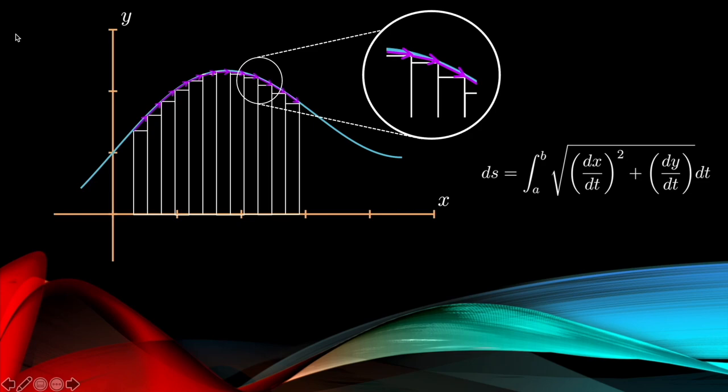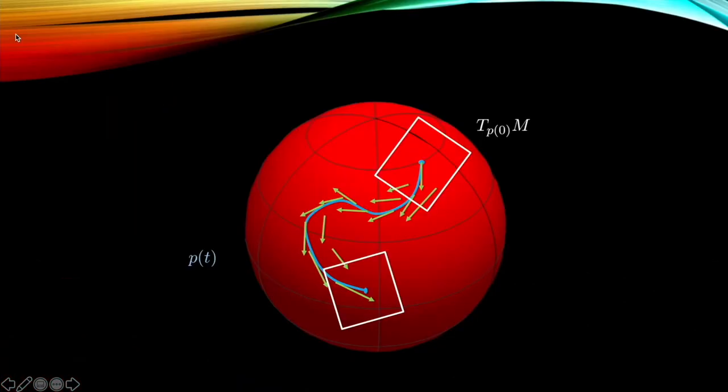If we take a curve and I look at all the tangent vectors, what I then do is I zoom in and I take this infinitesimal triangle and add them up. What I've done is I've added up all the tangent vectors to this curve, and that tells me the arc length. So the distance between any two points in the curve is exactly given by this integral expression here.